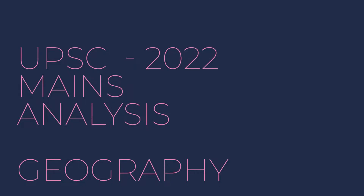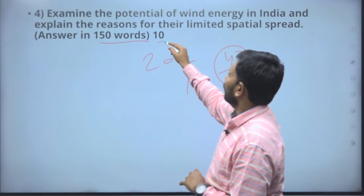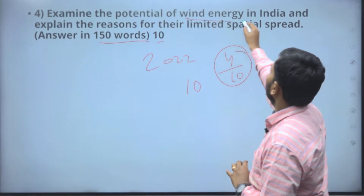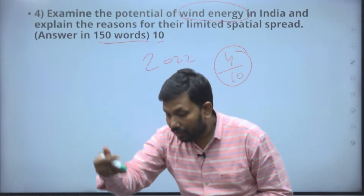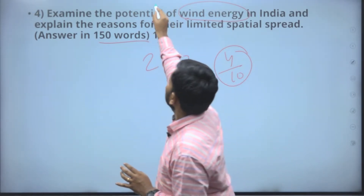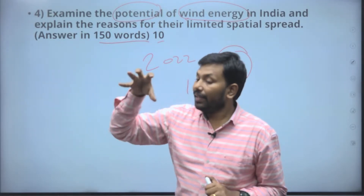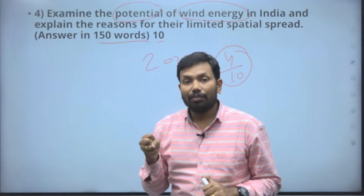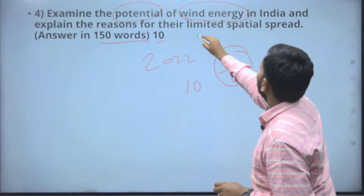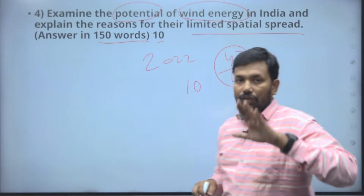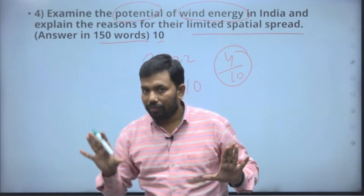In the fourth question, we are asked to write a 150-word answer carrying 10 marks: examine the potential of wind energy harvesting units in India and explain the reasons for the limited spatial spread. So it's about where we can use this resource and where we cannot.